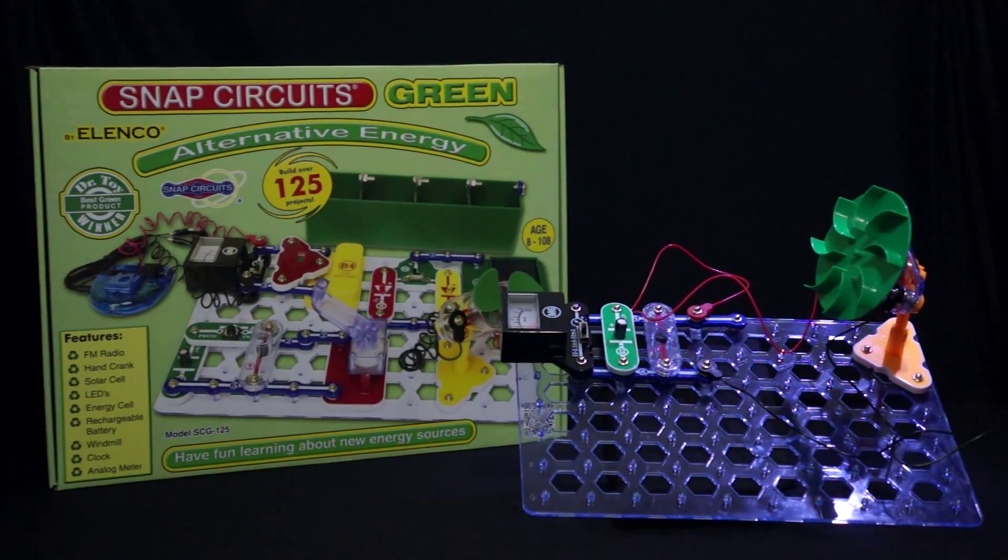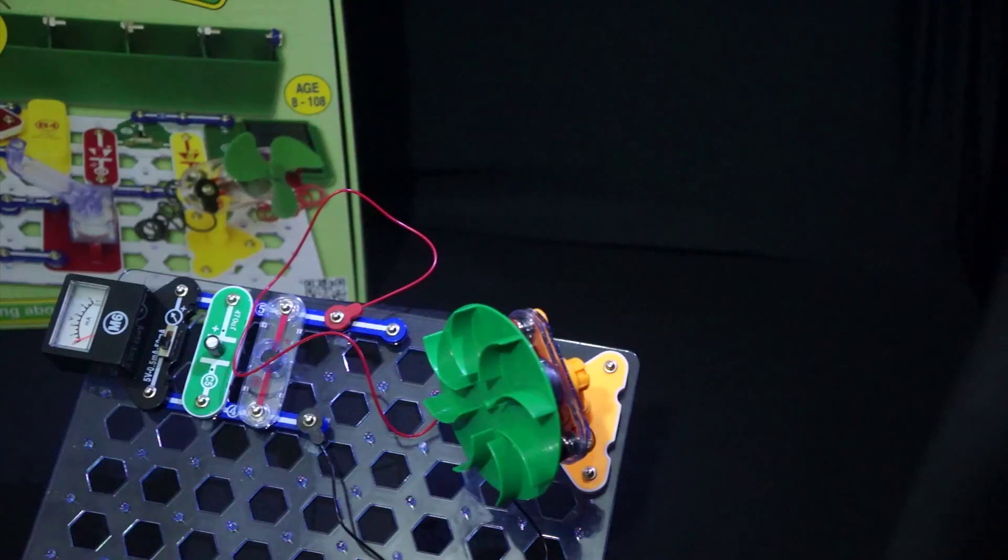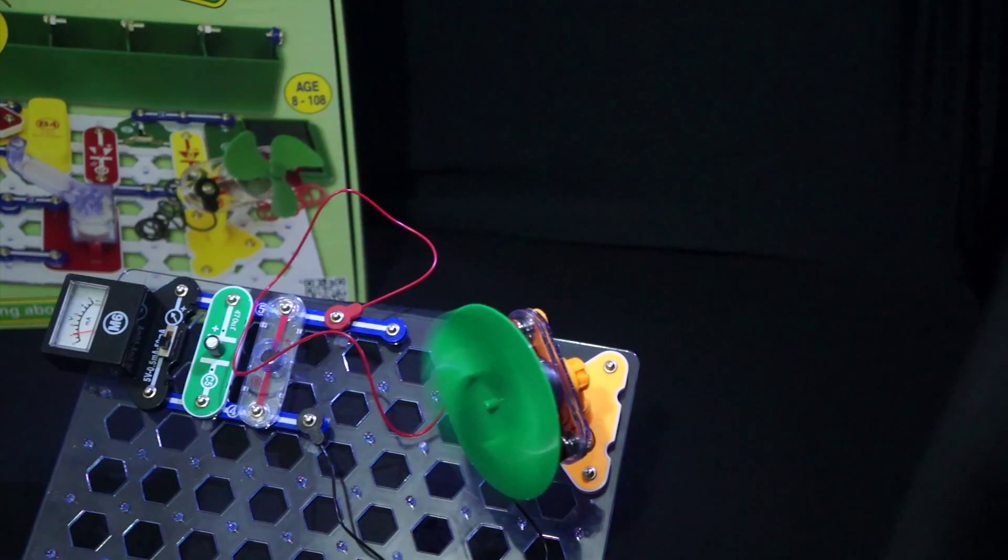Snap Circuits Green is one of many specialized sets. This set brings an emphasis on renewable energy. It comes with 125 projects and contains over 40 parts.